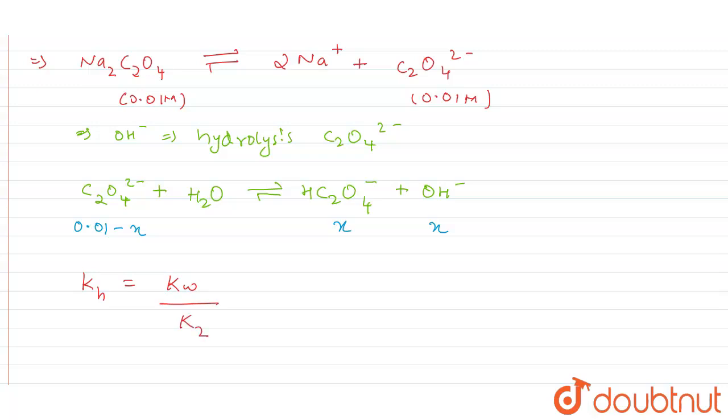Why K2? Because we have only generated one of the acid back, so we have done hydrolysis only one time. So K2 value we have to take and not K1 value. So here this will become Kh is equal to Kw by K2.